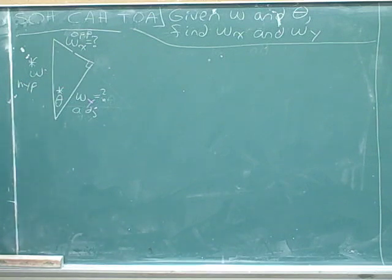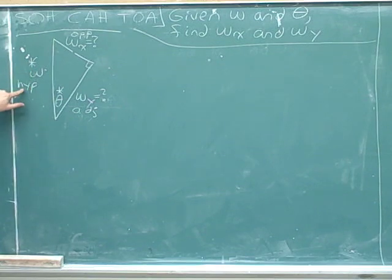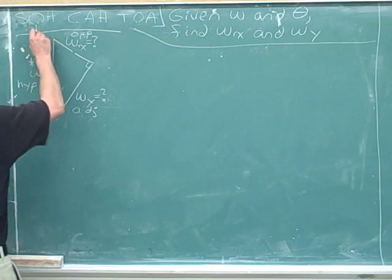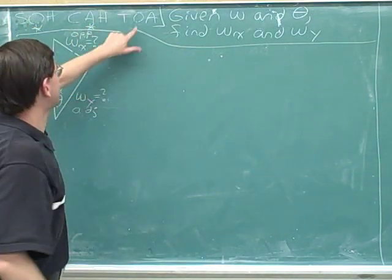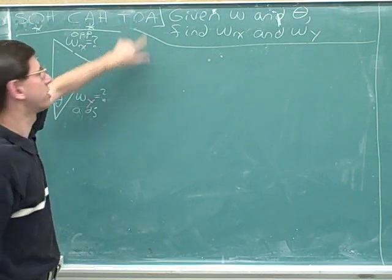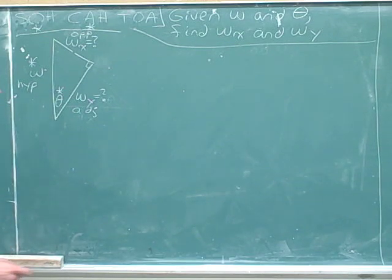Let's make a plan for which trig functions are going to be useful. We're pretending we have a number for w, which is the hypotenuse, so we need trig functions that refer to the hypotenuse. Sine refers to the hypotenuse, and cosine refers to the hypotenuse — it won't help to use the tangent, since that doesn't refer to the hypotenuse. So our plan is to use sine and cosine. We can use them in any order; let's start with cosine.